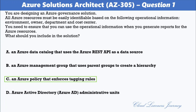You apply tags to your Azure resources, resource groups, and subscriptions to logically organize them into a taxonomy. Each tag consists of a name and a value pair. You use Azure Policy to enforce tagging rules and conventions. Instead of manually applying tags or searching for resources that aren't compliant, you create a policy that automatically applies the needed tags during deployment.